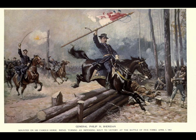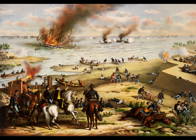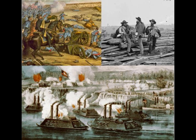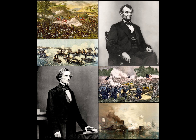In 1859, abolitionist John Brown attempted to incite a slave revolt by raiding a federal arsenal at Harper's Ferry, Virginia. Although the raid failed and Brown was executed, his actions made him a martyr for the anti-slavery cause and heightened fears of a northern plot to abolish slavery by force.